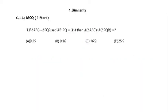The first problem: if triangle ABC is similar to triangle PQR, and AB is to PQ is equal to 3 is to 4, then what is the area of triangle ABC to area of triangle PQR? We have four options: 9 is to 25, 9 is to 16, 16 is to 9, or 25 is to 9.